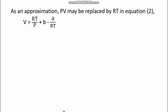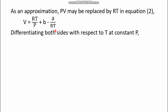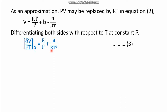As an approximation, pv may be replaced by RT in equation number two, so v ≈ RT/p + b − a/RT. Now differentiating both sides with respect to temperature at constant pressure gives (∂v/∂T)_p. Since b is constant it vanishes, RT/p differentiates to R/p, and −a/RT becomes +a/RT². This gives equation number three: (∂v/∂T)_p = R/p + a/RT².